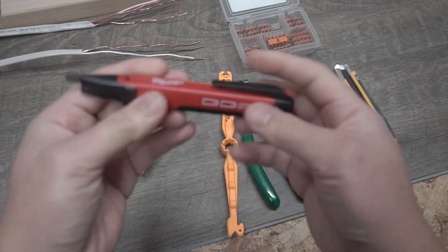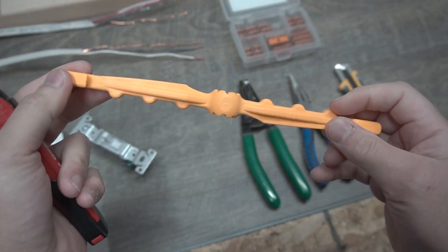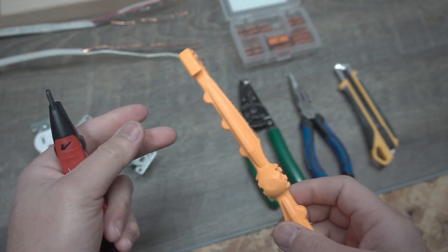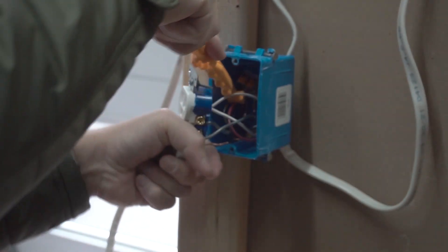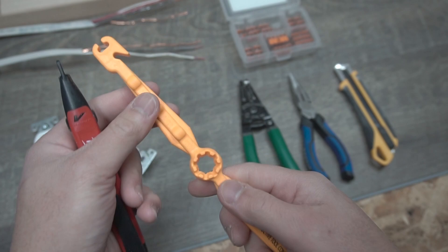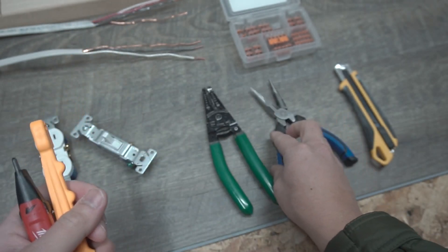You always want to have a voltage detector. This one, I like using this Volt Claw. This is awesome when you're going and trying to tuck in all the wires inside the J-Box. Very useful tool. You got a wire stripper, needlenose pliers, utility knife.